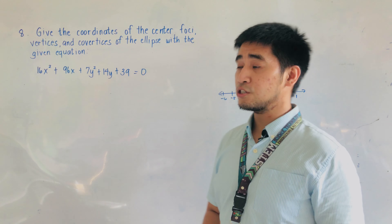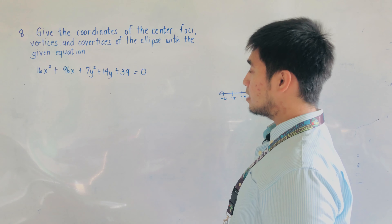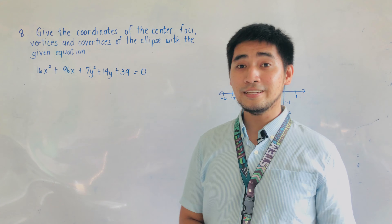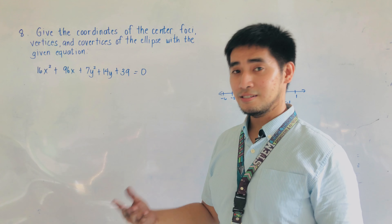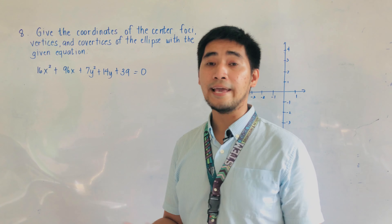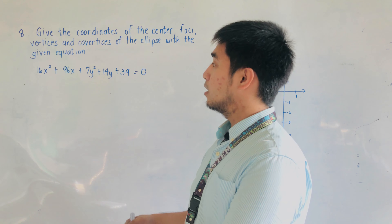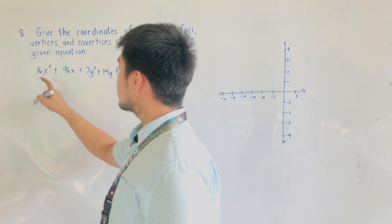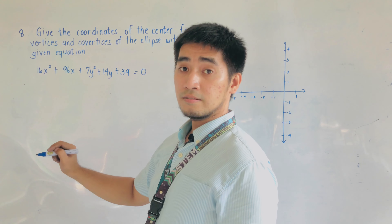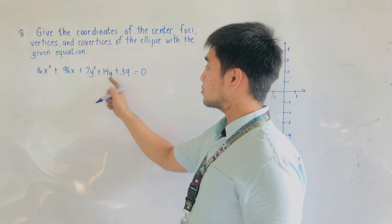We're now given the equation 16x squared plus 96x plus 7y squared plus 14y plus 39 is equal to 0. Same process — all we have to do is complete the x terms and then complete the y terms. Since we have x squared and x, and y squared and y, we're ready to proceed.